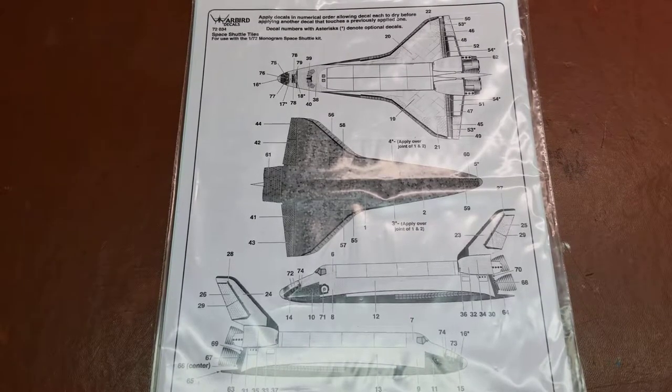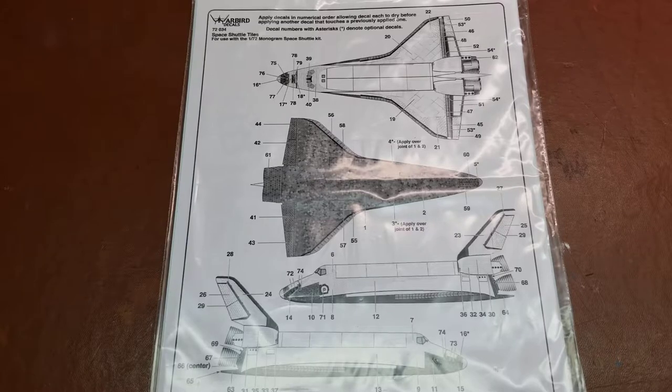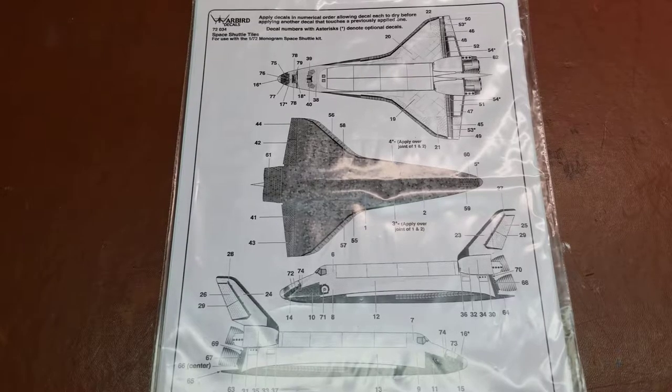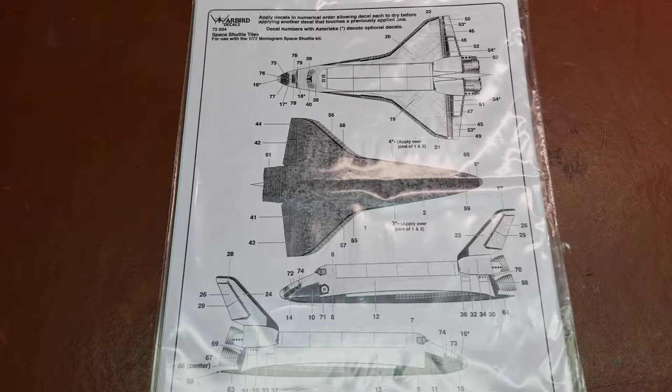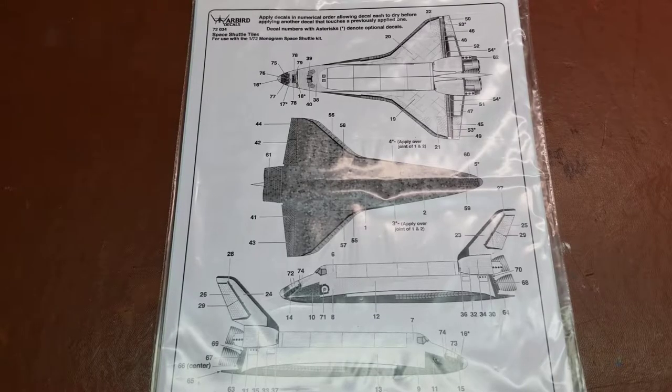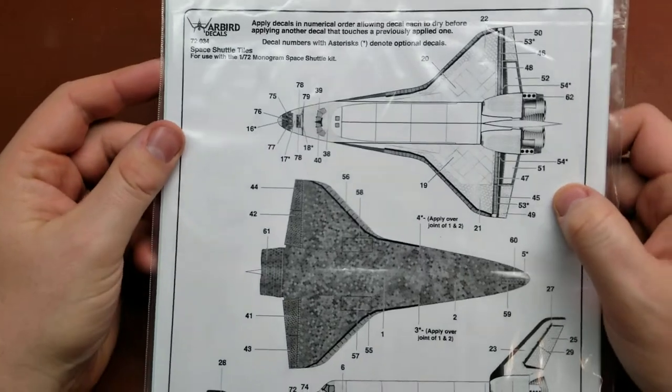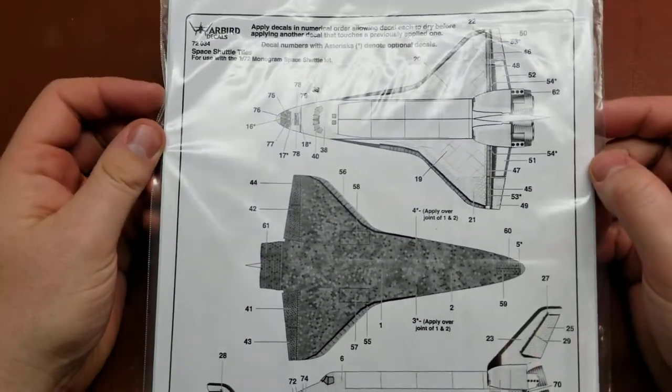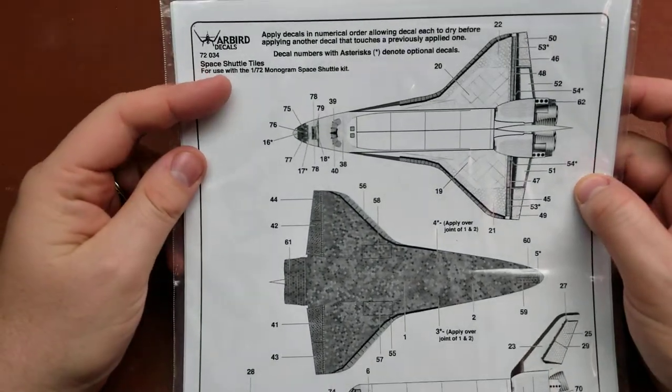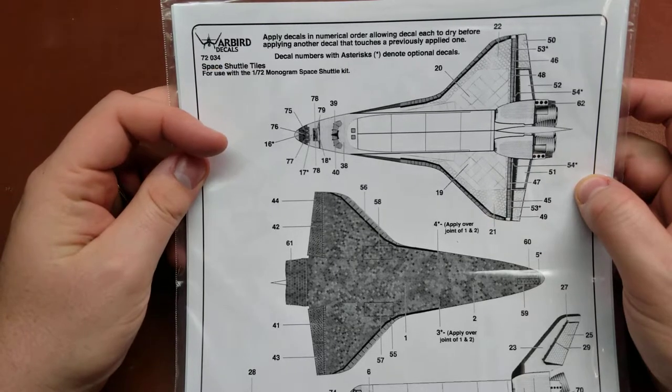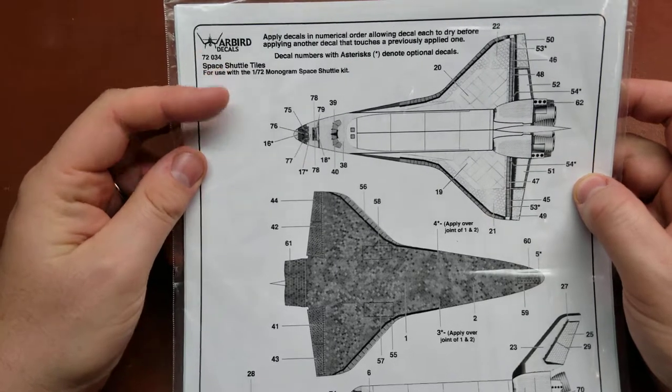Hello YouTube! Today on Details and Dioramas I have from Warbird Decals the 1/72nd Space Shuttle Tiles Decal Set. Again this is for the 1/72nd scale massive space shuttle and we have kit number up here, 72034.